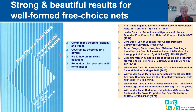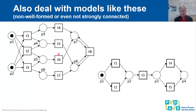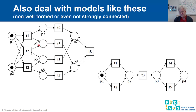The limitation of all these results is that they always assume the free choice net is well-formed. But we would also like to deal with Petri nets that are not strongly connected. For example, a free choice net where P1 and P2 have no input arcs — because it is not strongly connected, it cannot be well-formed.